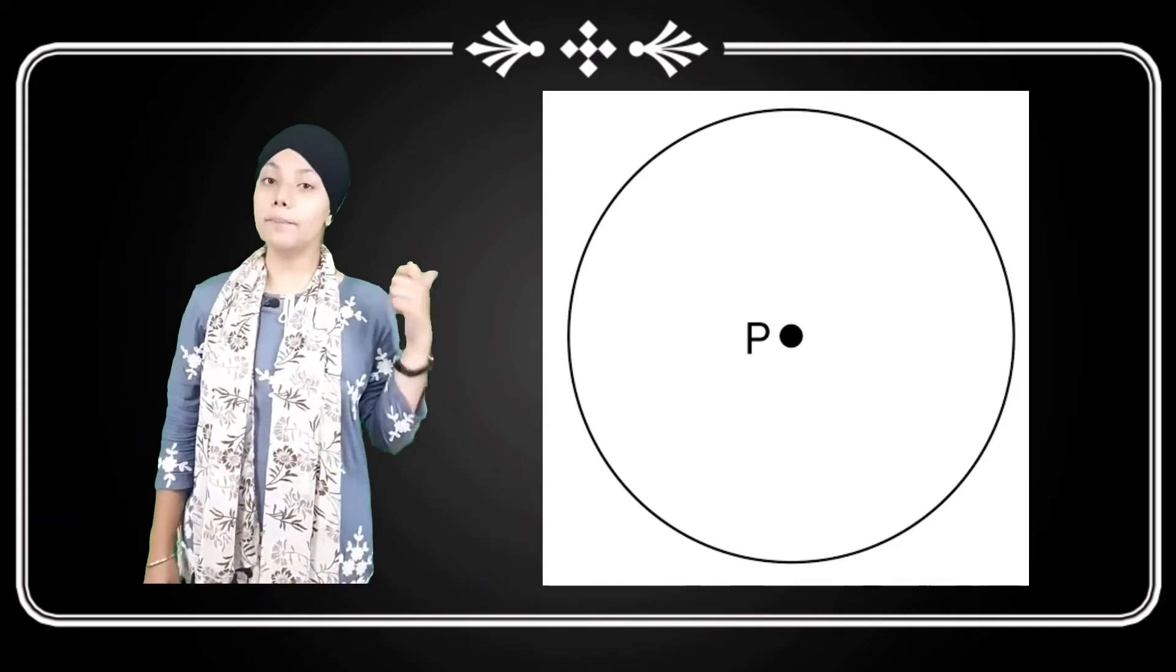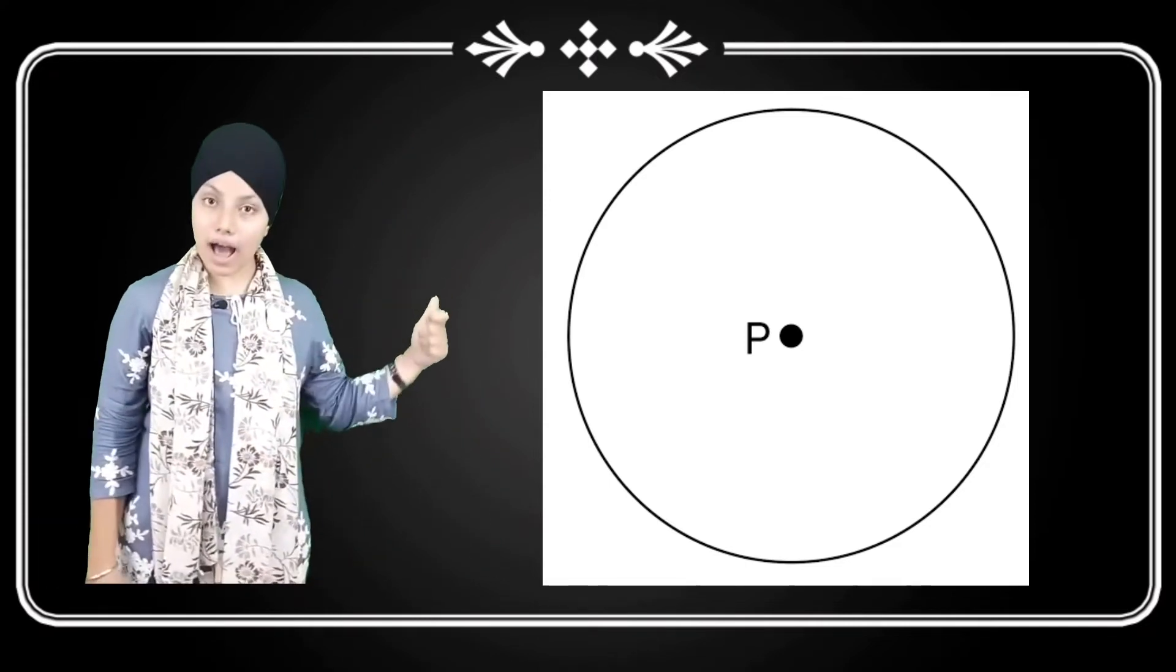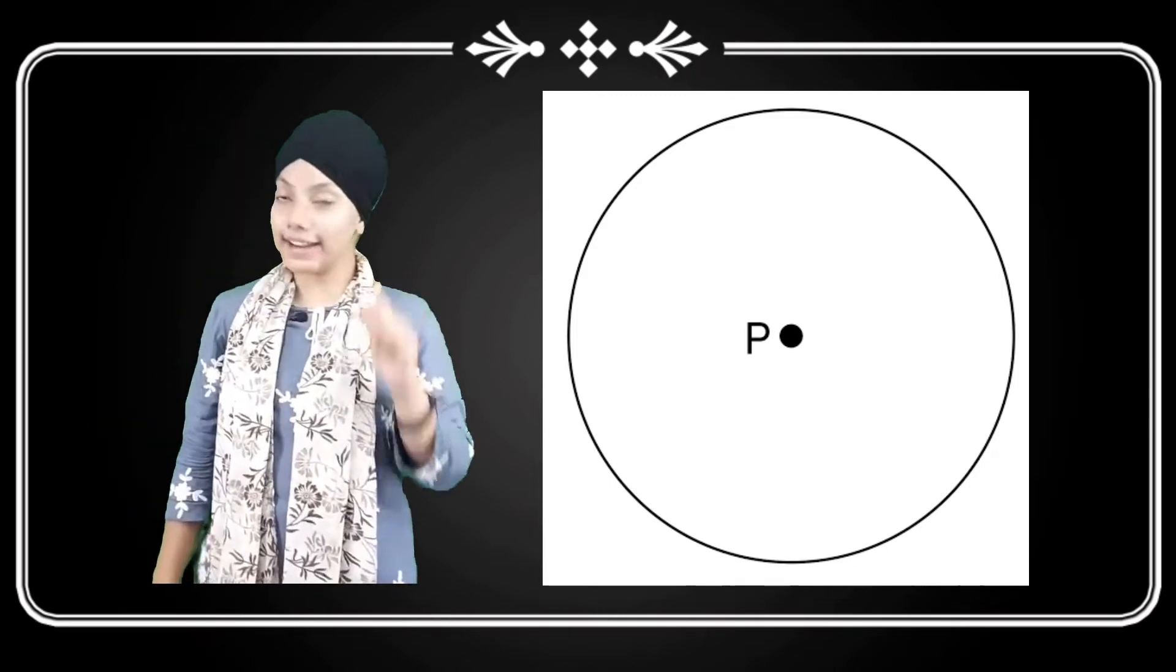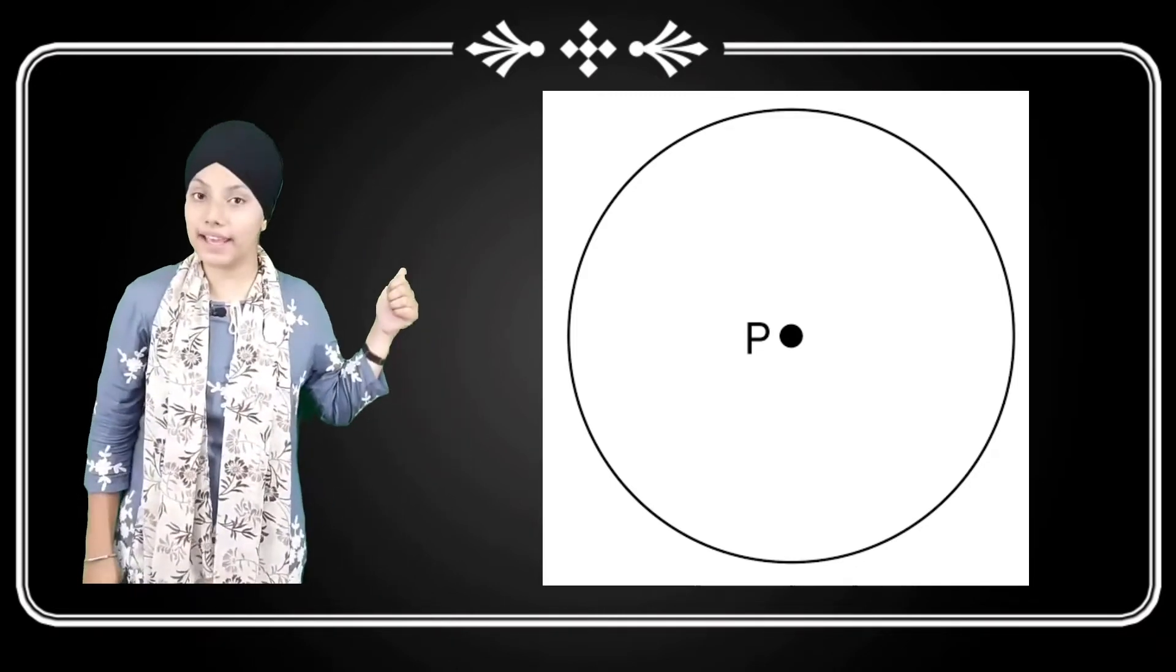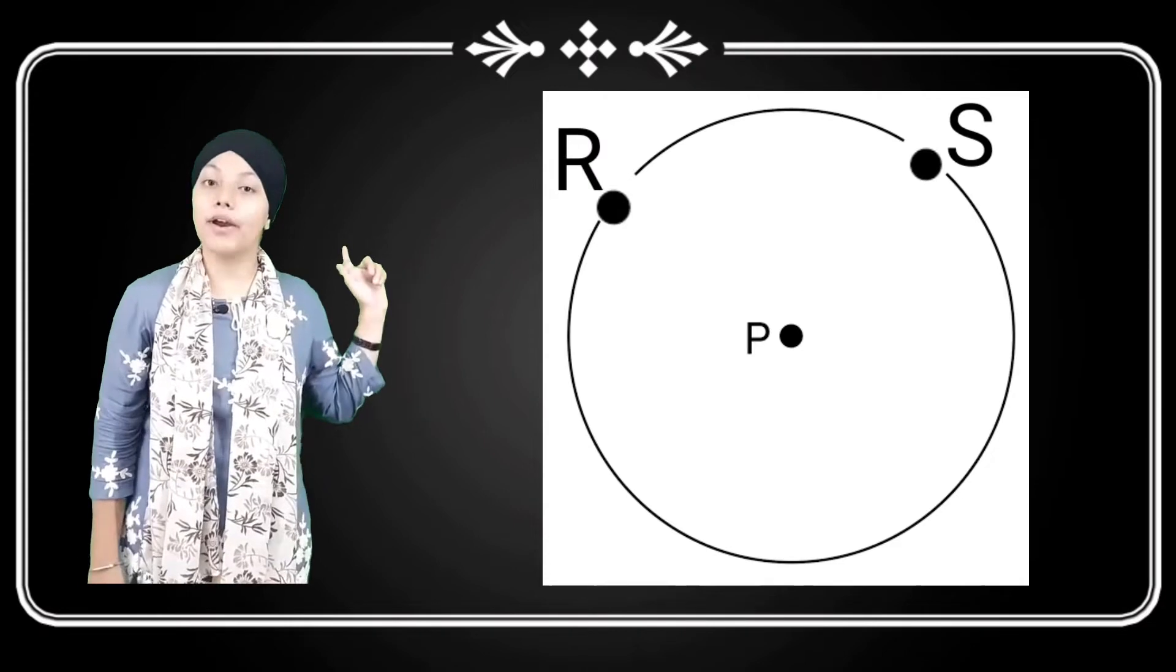For example, we have point P, R, S. We read these points as point P, point R, and point S.